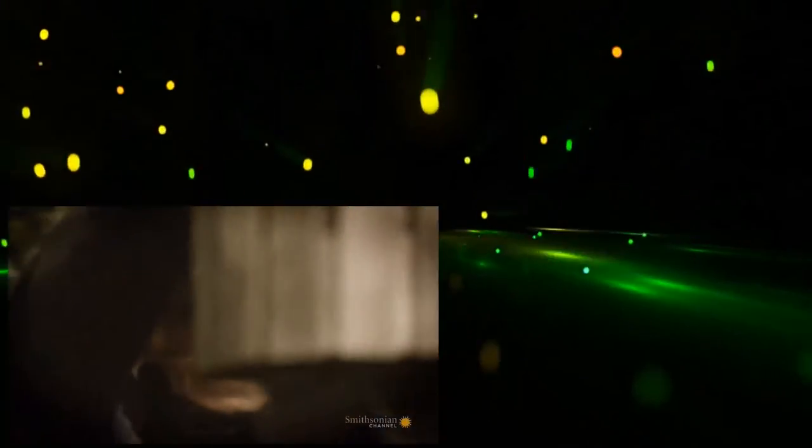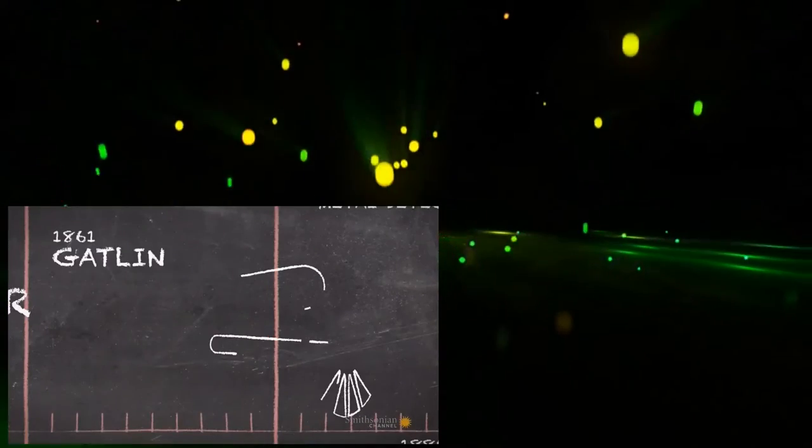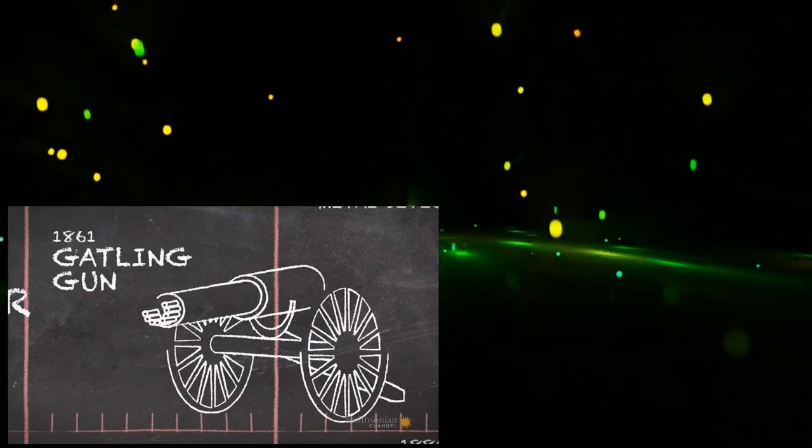1864. The Civil War. With casualties already in the hundreds of thousands, one weapon makes its debut on the battlefield. Its name, the Gatling Gun. Its firepower is so devastating, a version of it is still used by global armed forces today.